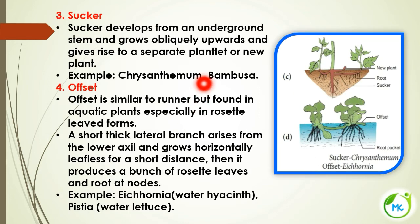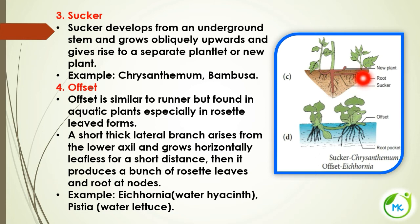The third kind of subaerial stem modification is sucker. It develops from an underground stem and grows obliquely upward, giving rise to a separate plantlet or new plant. Example: Chrysanthemum.